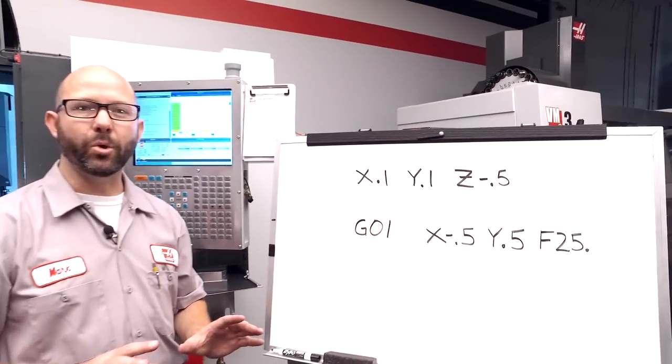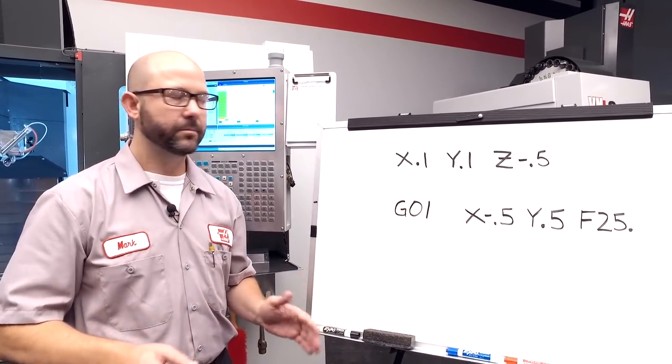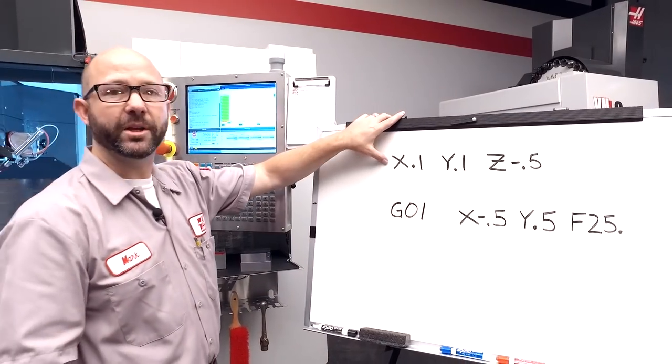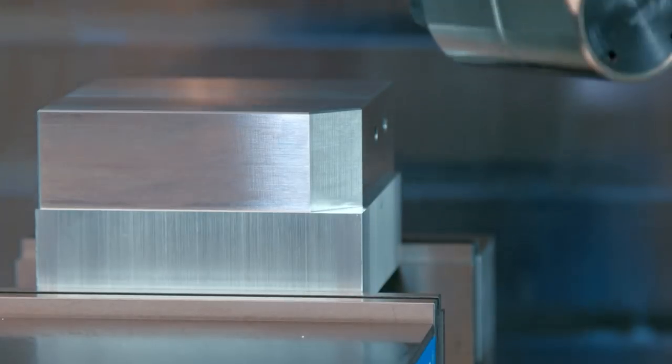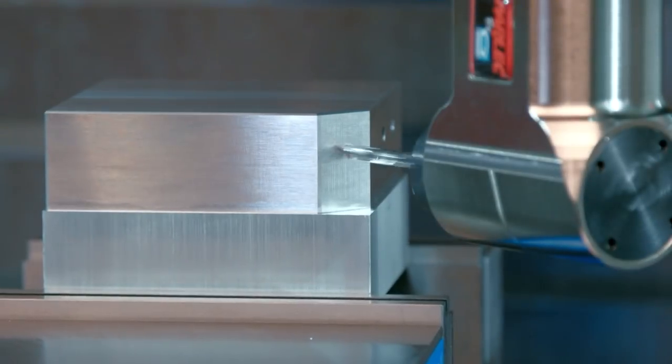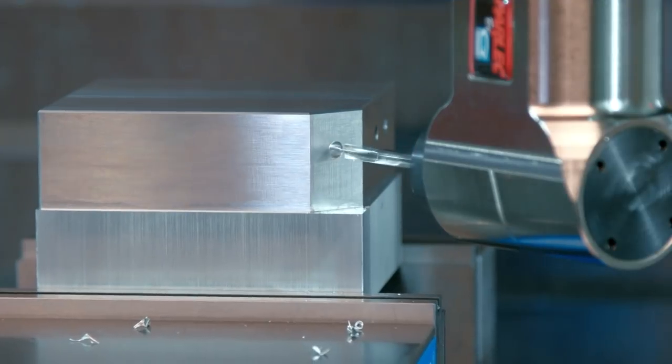Okay, so to drill a hole at some funny angle, doesn't matter what the angle is, all we've got to do is program a starting location. This is where the tip of our drill needs to move to before it drills the hole. Then we just use a G1 to feed to the end point of our drill.